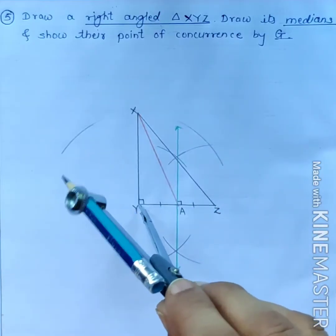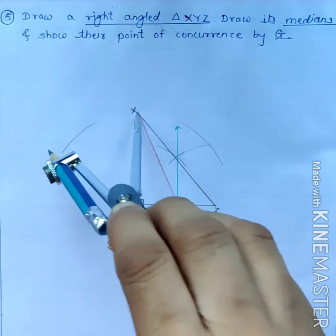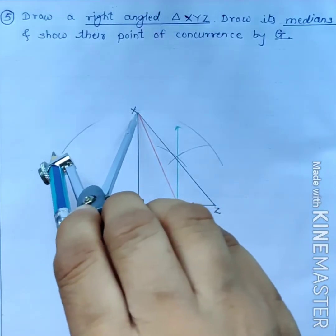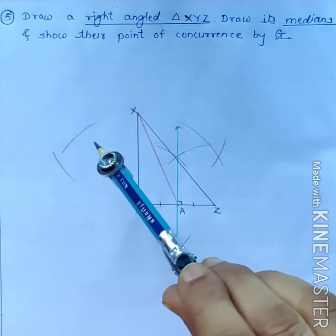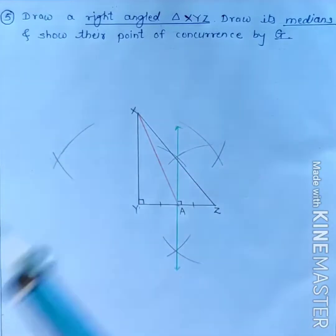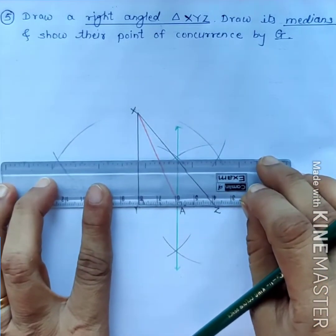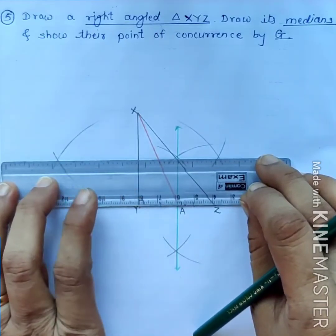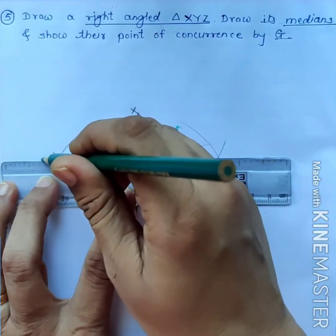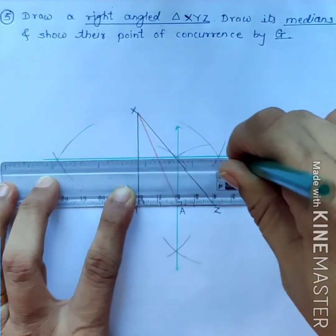Then, keep your compass on point X and draw arcs intersecting these two arcs like this. And then join these points. The line will intersect segment XY at midpoint like this.